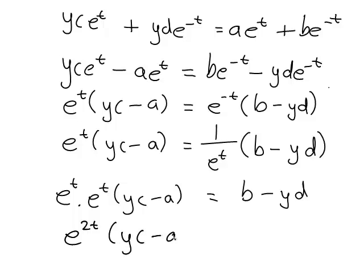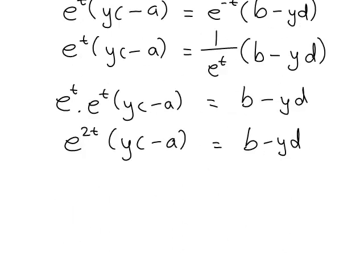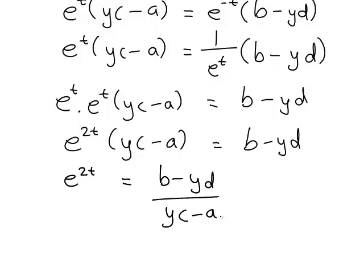So we have e^(2t) times (yc minus a) equals b minus yd. We've reduced it down to a single term involving t. The next step is to cancel (yc minus a) from the left — since e^(2t) is multiplied by (yc minus a), we divide both sides by (yc minus a), giving e^(2t) equals (b minus yd) divided by (yc minus a).